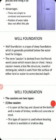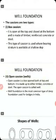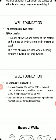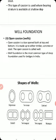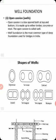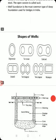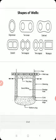Well foundation is a type of deep foundation which is generally provided below the water level for bridges. It is also known as a caisson. There are two types of caissons: box caissons and open caissons. Box caissons are open at the top and closed at the bottom, made of timber, reinforced concrete, or steel, and used where bearing strata are available at shallow depth. Open caissons are also called wells. Well foundation is the most common deep foundation for bridges in India. The shapes of wells used include single circular, twin circular, double D, twin hexagonal, twin octagonal, and rectangular.